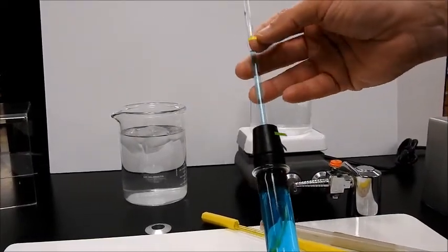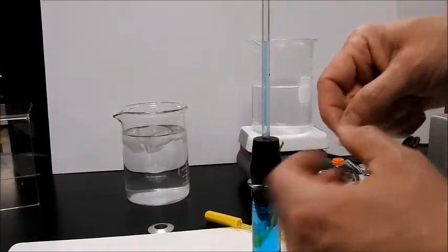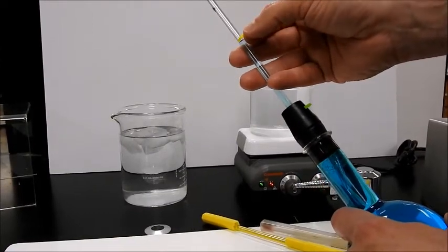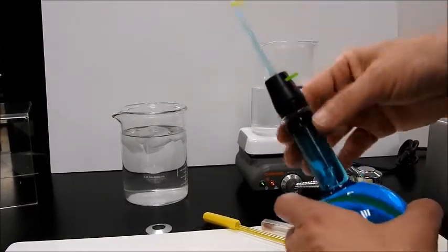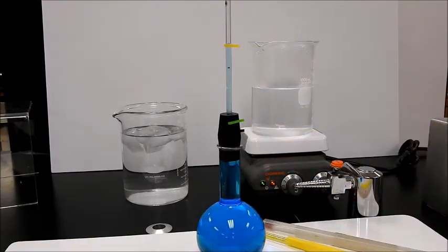And we'll put this yellow piece of tape right where the water level is right now. Okay, bottom of the meniscus. And I'm not going to wrap it around. I won't be able to move it for other situations. So that's the room temperature position. Can we see that? Yeah.